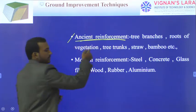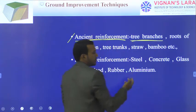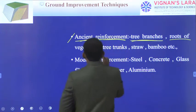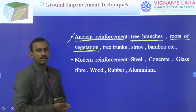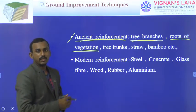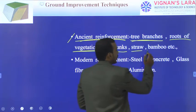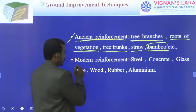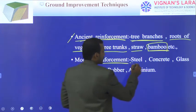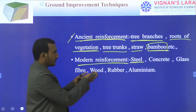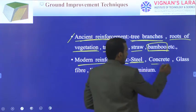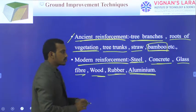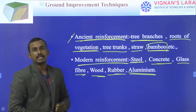In ancient times, the reinforcement used was tree branches, roots of vegetation, tree trunks, straws, or mostly bamboos — bamboos were used as strips. In modern reinforcement, we use steel rods — longitudinal steel members inserted into soil — as well as concrete, glass fibers, wood members, rubber, or aluminum. All these types of materials can be used as reinforcement to the soil.